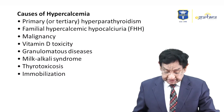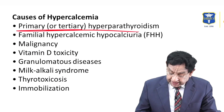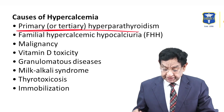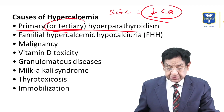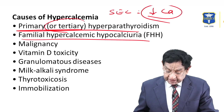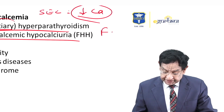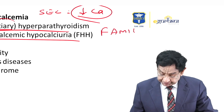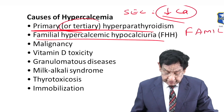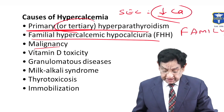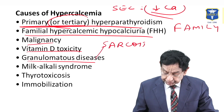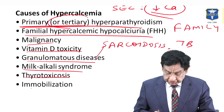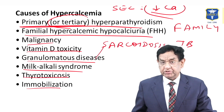Causes of hypercalcemia include: primary or tertiary hyperparathyroidism — note that in secondary hyperparathyroidism, serum calcium is reduced, not elevated. Familial hypercalcemic hypocalciuria, where family history is positive. Malignancies — various types to be discussed. Vitamin D intoxication. Granulomatous diseases like sarcoidosis and tuberculosis. Milk-alkali syndrome. Thyrotoxicosis and prolonged immobilization are also recognized causes.